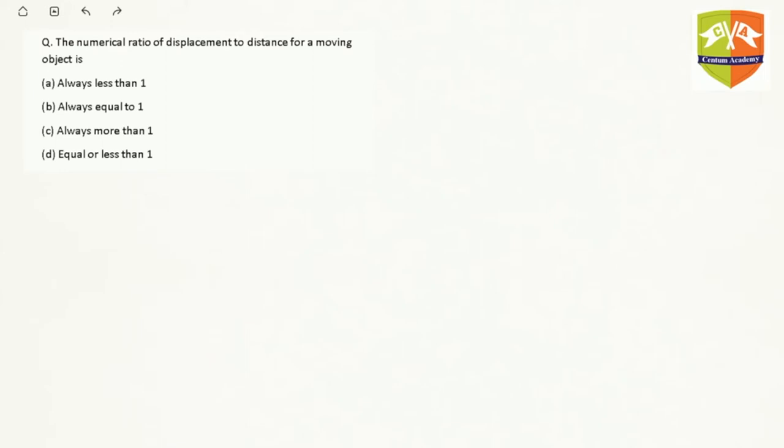First thing is distance. What is distance? Distance is the actual path length, the length of the path traversed by any object.